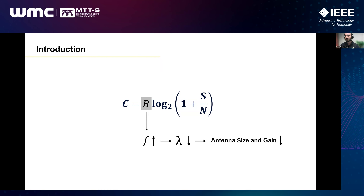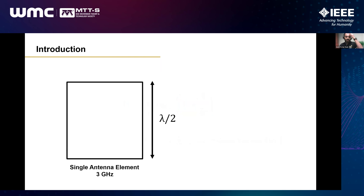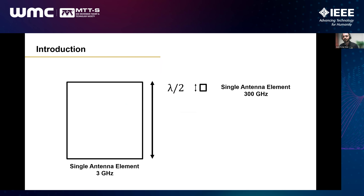But the problem is that when you increase the frequency the wavelength goes down, the antenna size goes down, and the gain goes down. This compromises SNR, and Shannon's theorem does not consider all the impairments which come into play in any transceiver. At 300 GHz with a single antenna element you hardly have any gain, so the clear solution — as many speakers have mentioned — is to go for phased arrays, as we do even at millimeter wave frequencies.